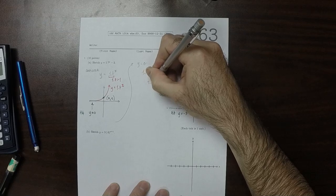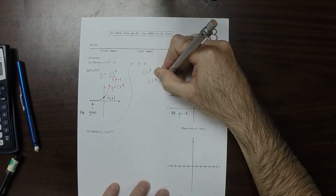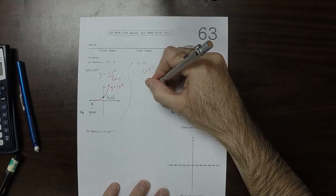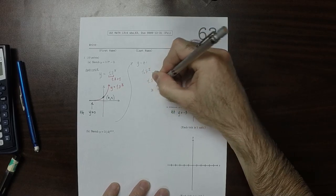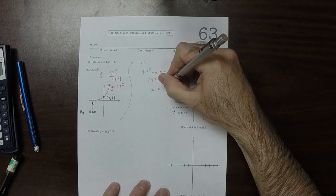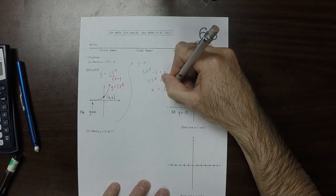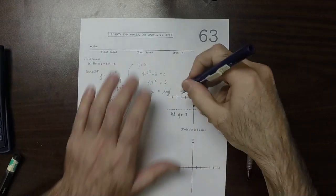So 1.7^x is 3. So x is the log base 1.7, log base 1.7.